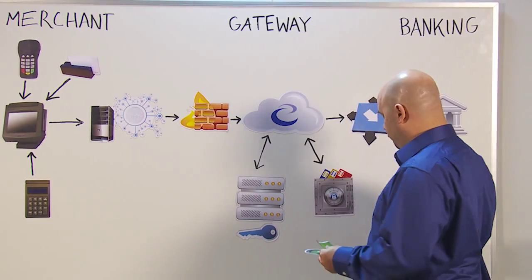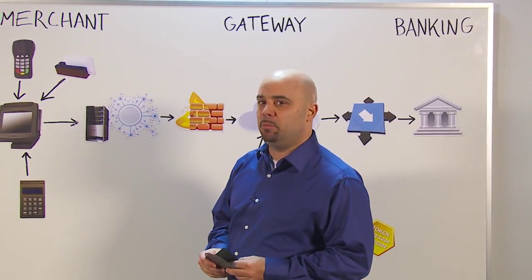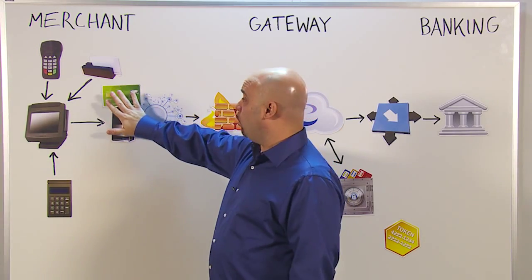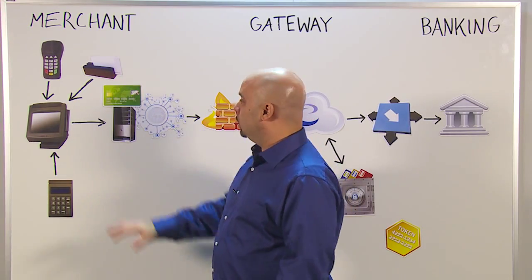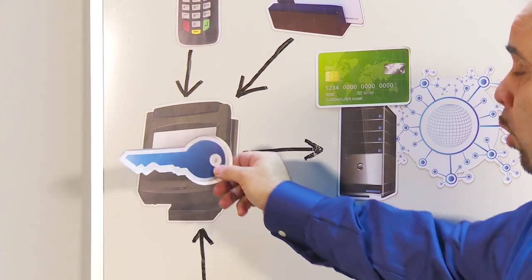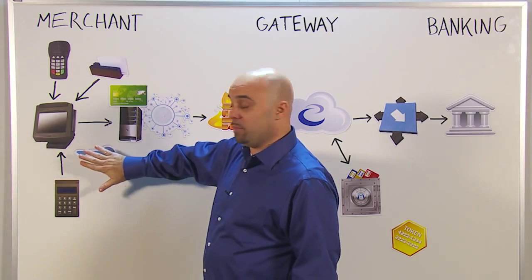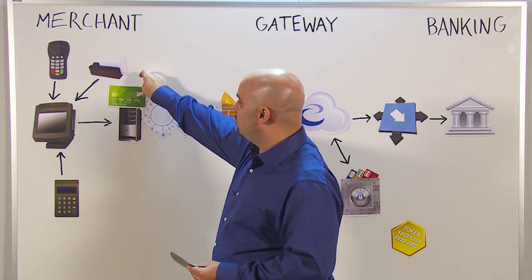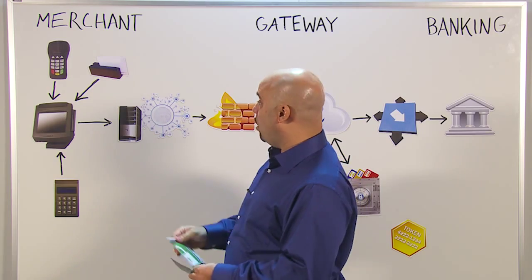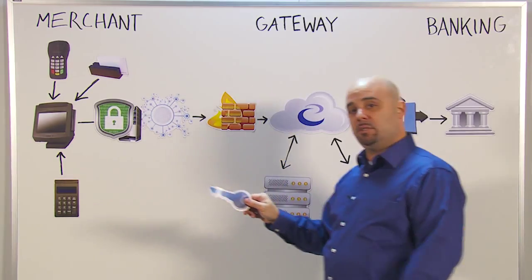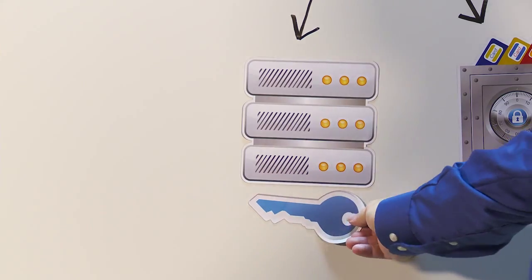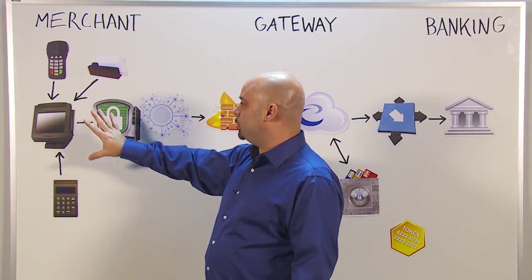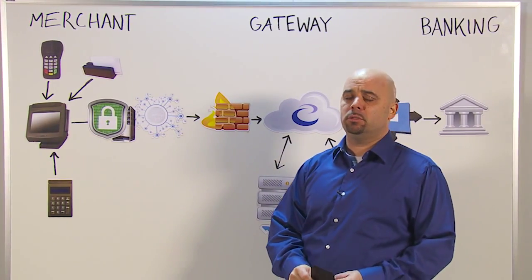The main differentiators here are that in the case where point-to-point encryption isn't being used, this data is existent on the server — in either virtual memory or some other application process. At the same time, the keys being used for local communication and encryption are within the system; they're there to be found. In the case where Transaction Shield and point-to-point encryption are being used, this data does not exist on that side. All you ever have is the encrypted form, and the only place the key exists is at the decryption appliance. This provides a great amount of risk management as well as potential scope reduction from a PCI perspective.